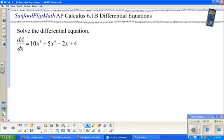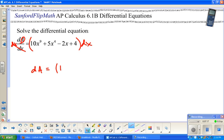This looks like fun. You guessed it. Separate the variables. dA on everything about, in this case, A on one side. And, everything about x on the other. I think most of these examples are coming out of the book that we use. The Finney, Demana, Waits, Kennedy book.